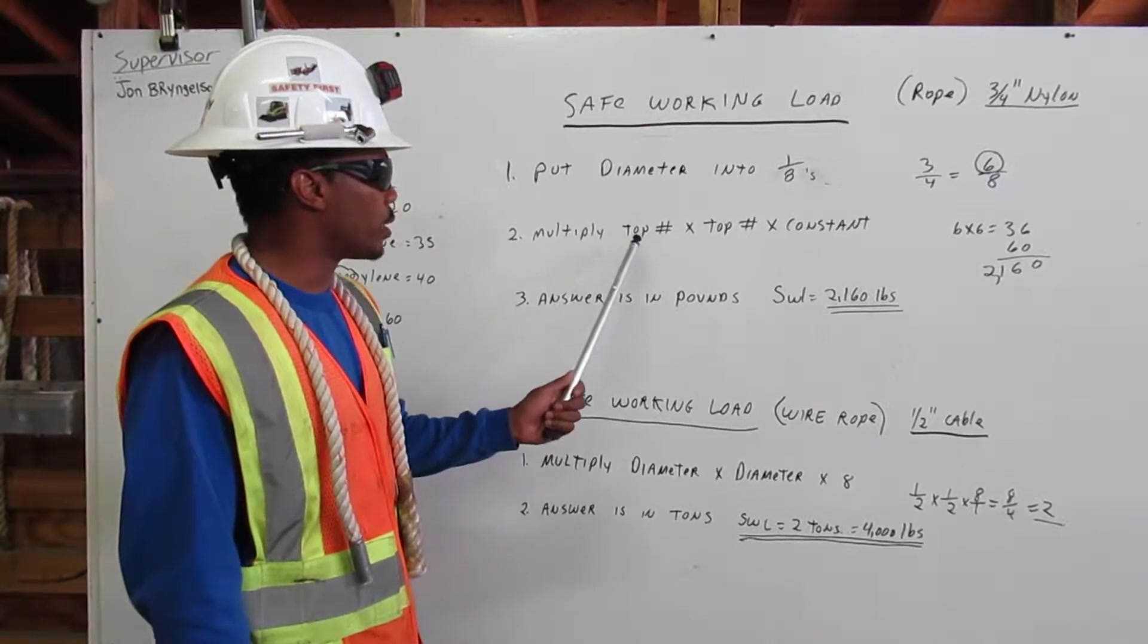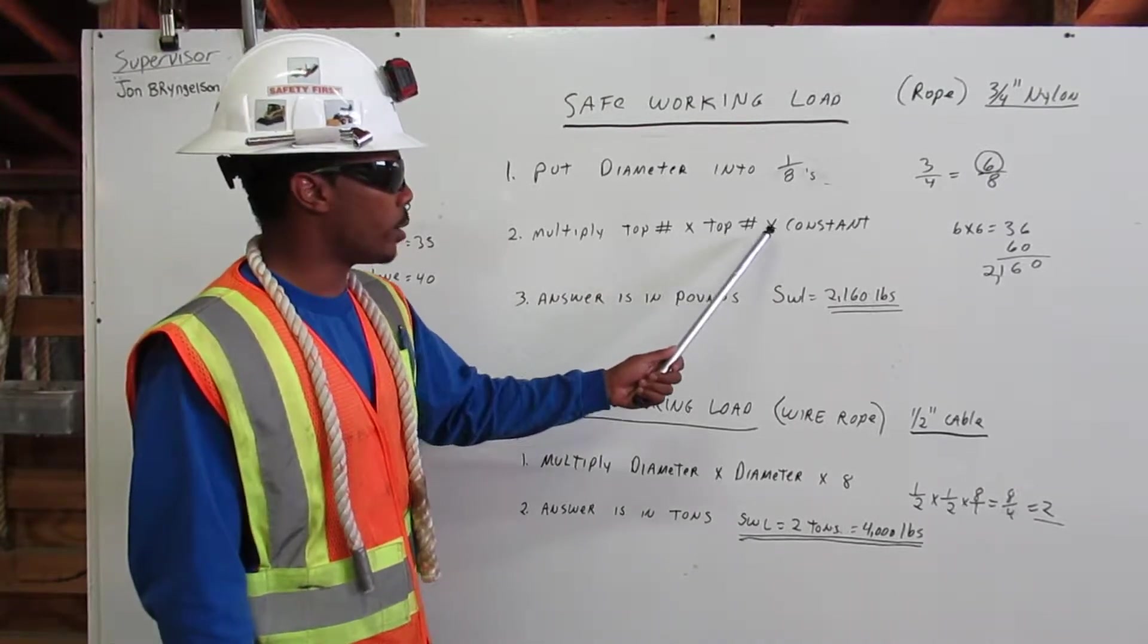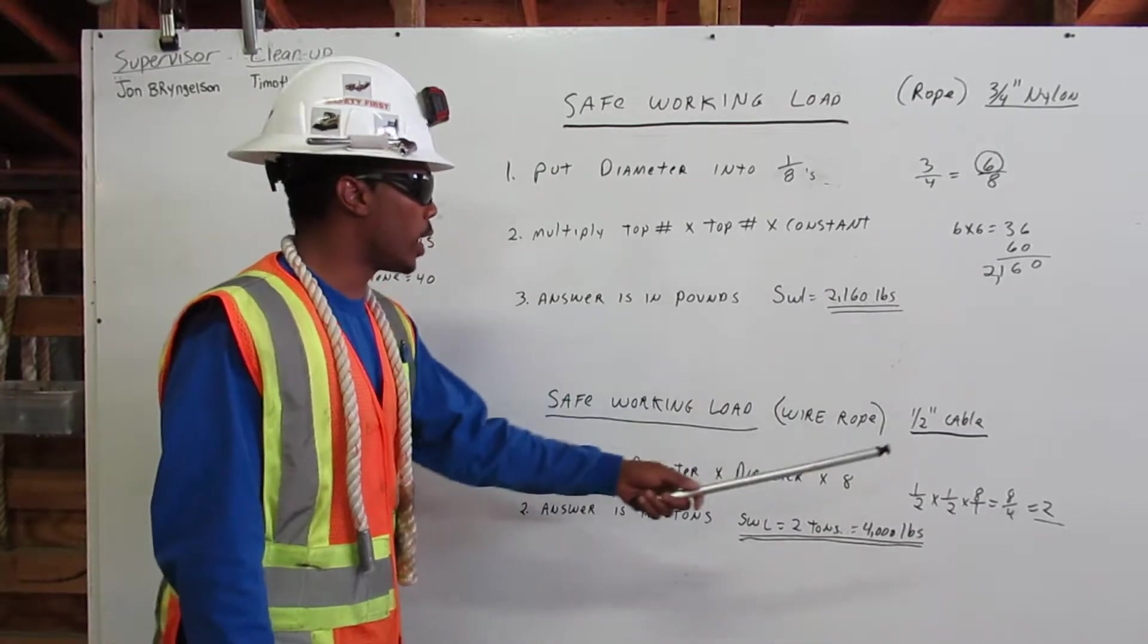Next, multiply top number times top number times constant. But first, let's check on the constants.